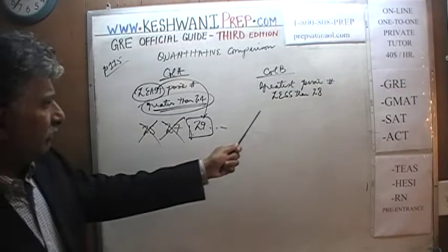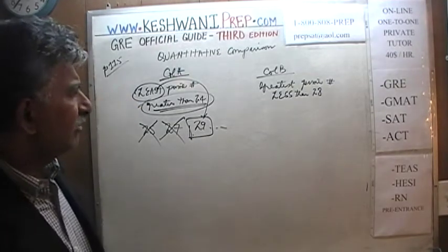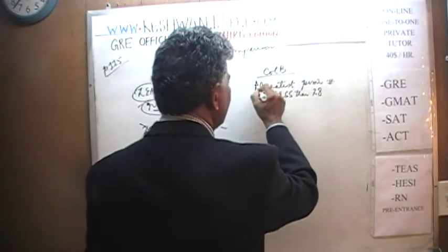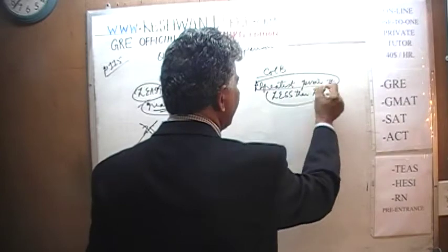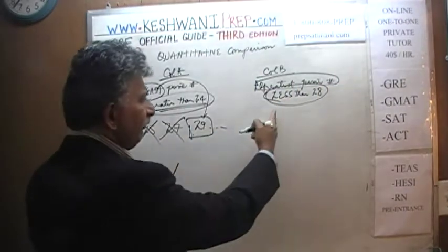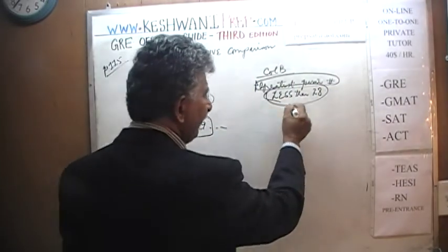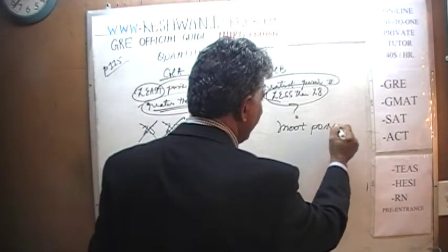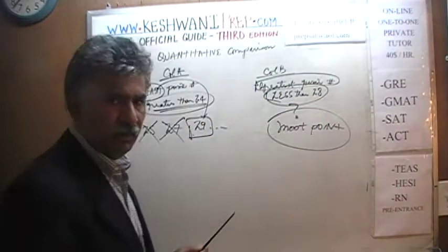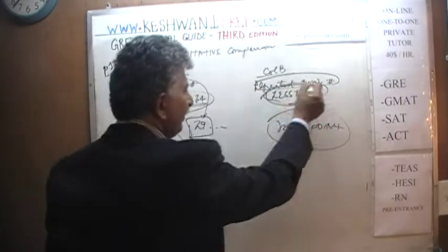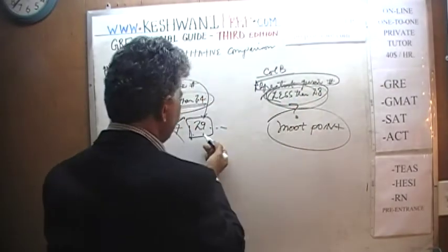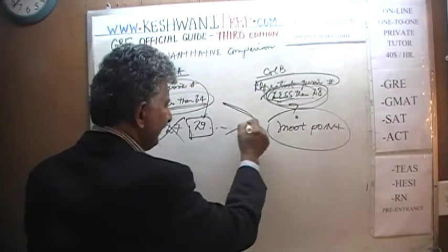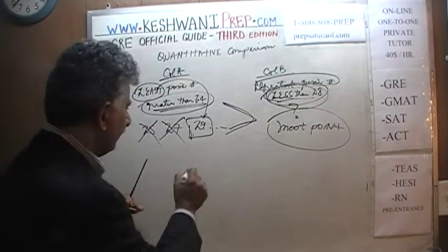Once we have the answer to column A, we go to column B. It says the greatest prime number less than 28. It doesn't matter what the greatest prime number is, because it says it has to be less than 28. Well, if it's less than 28, what it is here is a moot point. Something less than 28 is, of course, less than 29. The answer is A.